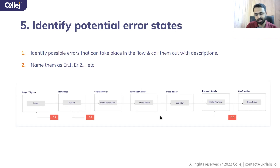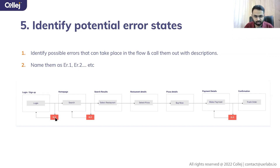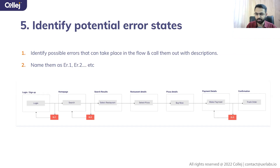Next, identify potential error states. When doing the workflow, there will be error states in different stages. For example, in login, an error could be that the username or password is incorrect, so the user cannot log in — you document that error and describe how to handle it. Another error: when searching, you might not find anything. In payment, errors can include payment not accepted, gateway not working. You can number and document all errors and plan for them.